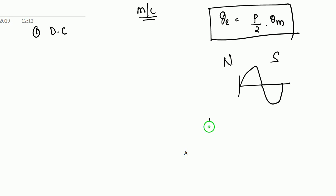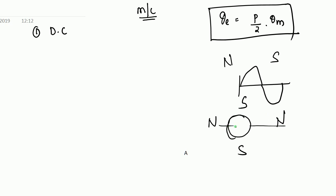For example, we have 4 poles. This is the rotor, and the rotor also has mechanical rotation. The rotor is starting at this point, and it goes to 30 degrees, and its complete cycle is 360 degrees.